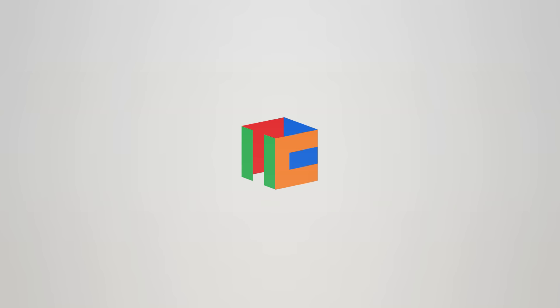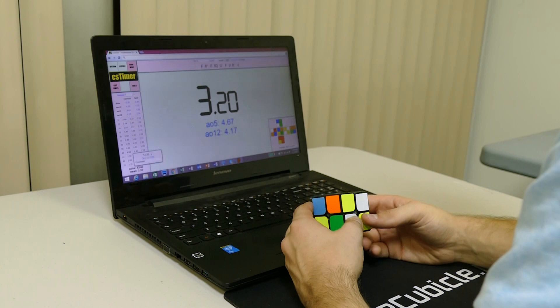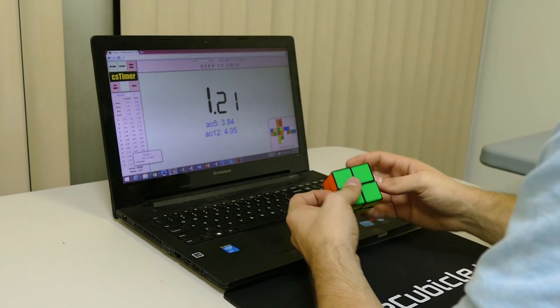The Weipo is the newest 2x2 released by Moyu, and it's considered their best so far. Measuring 50mm, this cube is a pretty fast, yet controllable 2x2.